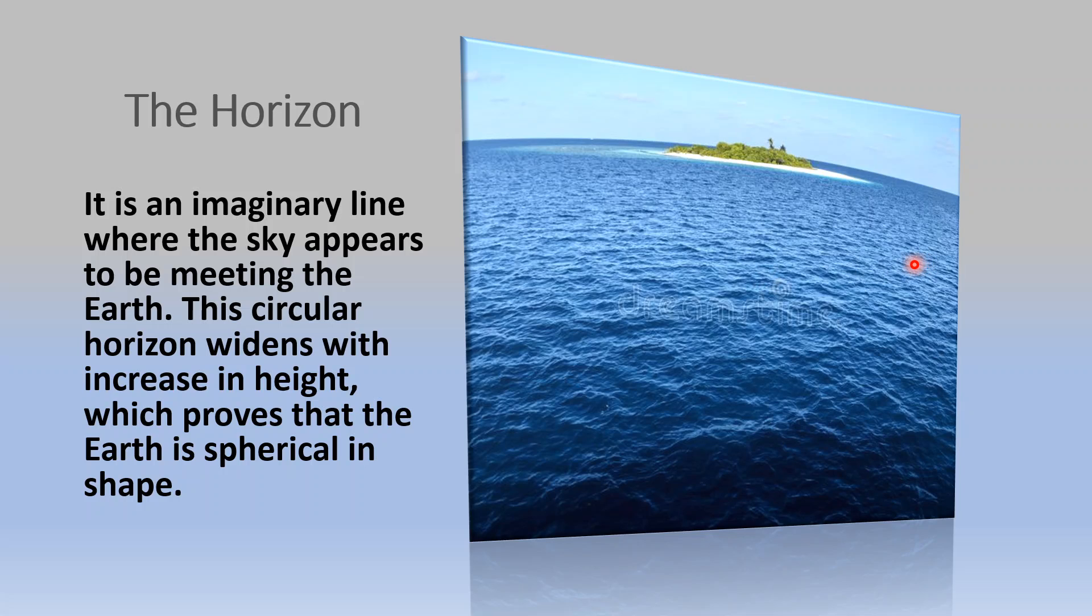Now let's see what is the horizon. The horizon is an imaginary line where the sky and the Earth appears to be meeting. This circular horizon widens with the increase in height. That is when we go high up, we can see a larger part of the spherical nature of the Earth. This proves that the Earth is spherical in shape.